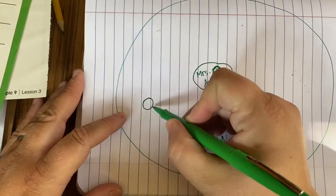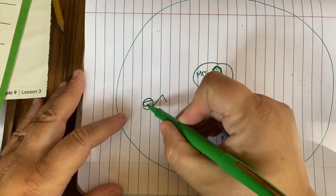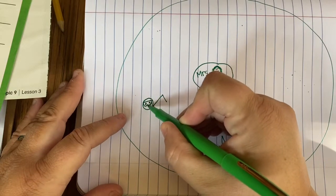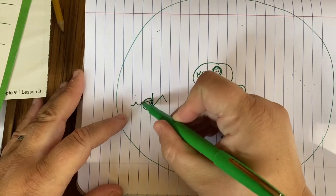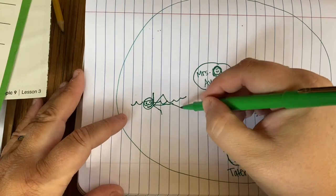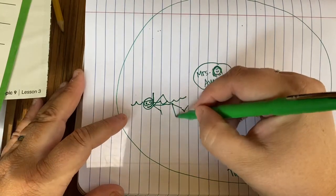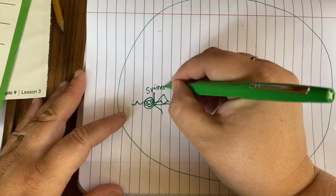So another thing that I like to do is I like to go swimming in the ocean. Here's my little goggles. So I'm going to put swimming.